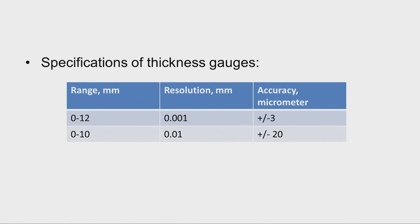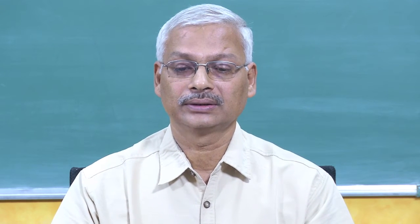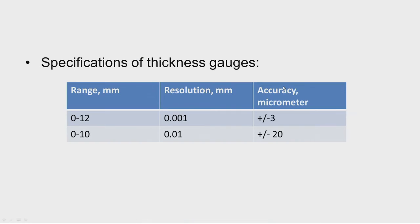Specifications of thickness gauges: available in ranges of 0 to 12 mm and 0 to 10 mm, with resolutions of 0.001 mm and 0.01 mm, offering accuracy of plus or minus 3 microns to plus or minus 20 microns. Depending on our requirement, we select and use the appropriate instrument.